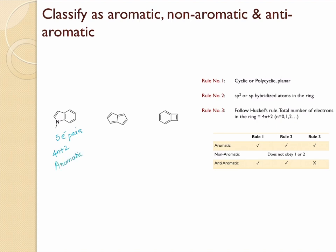The next bicyclic compound is cyclic and all atoms are sp2 hybridized, so rules one and two are obeyed. For rule three, it has four electron pairs — an even number — which is a 4n system, not 4n+2. Therefore this compound is anti-aromatic.